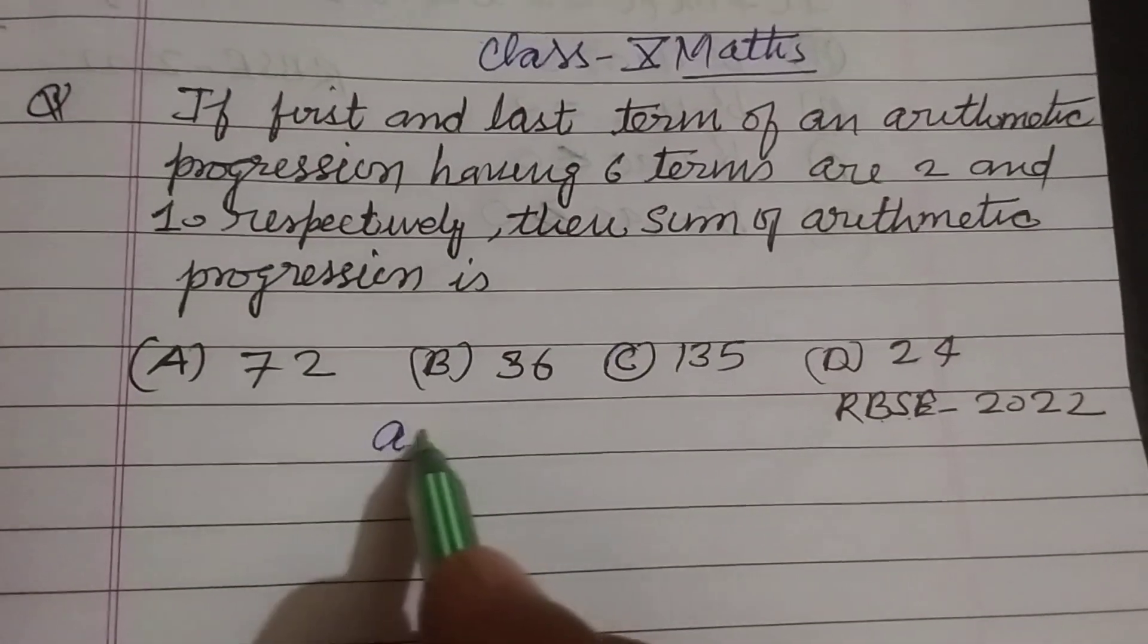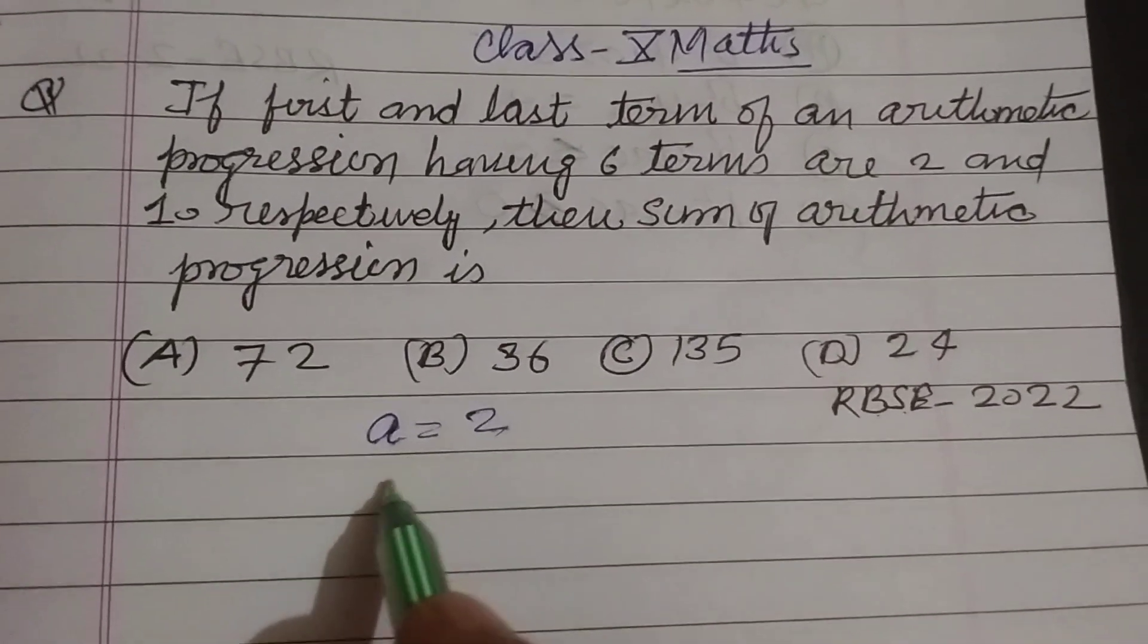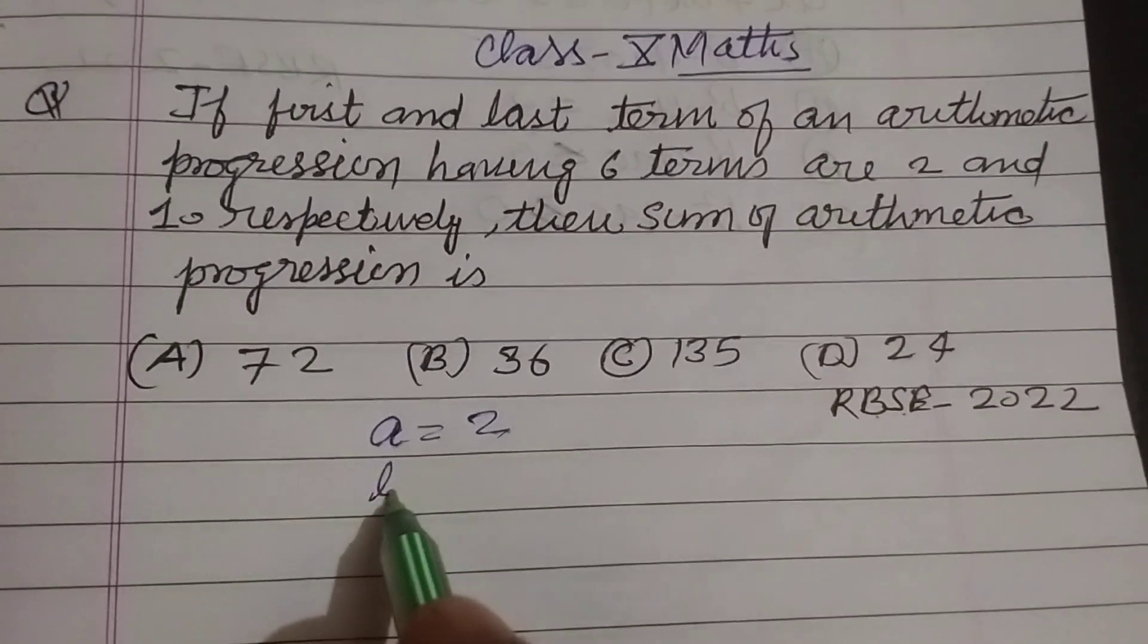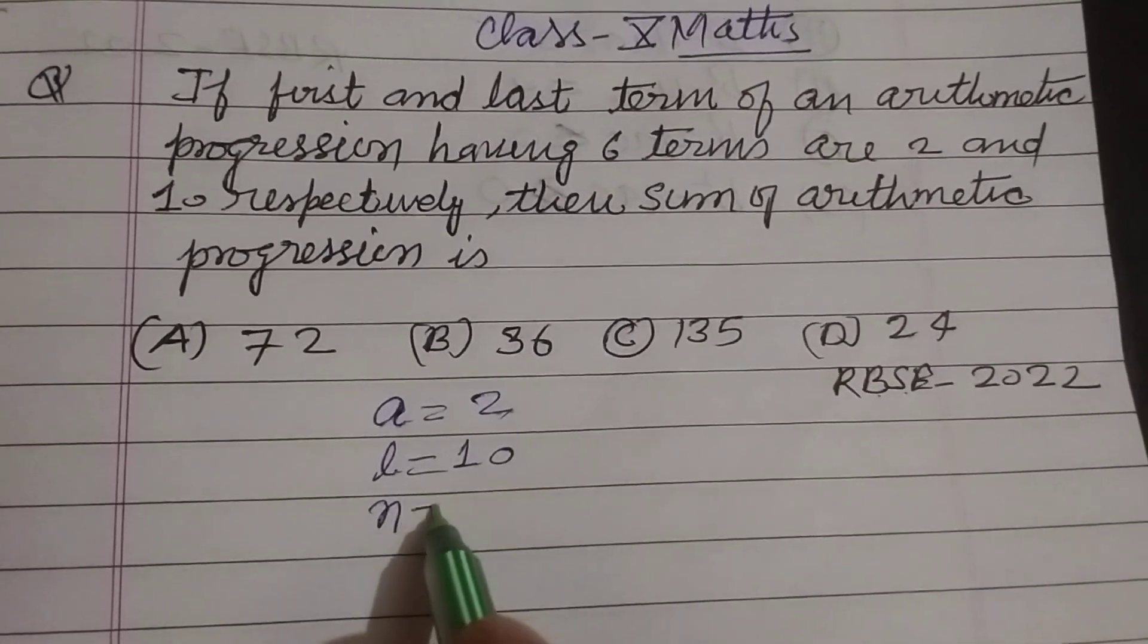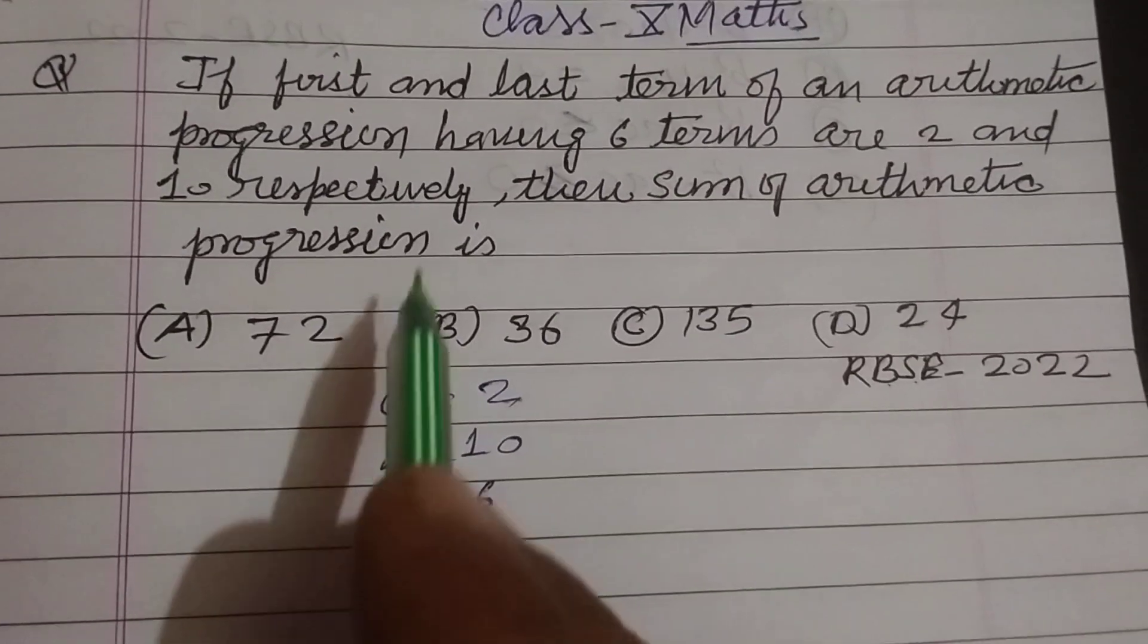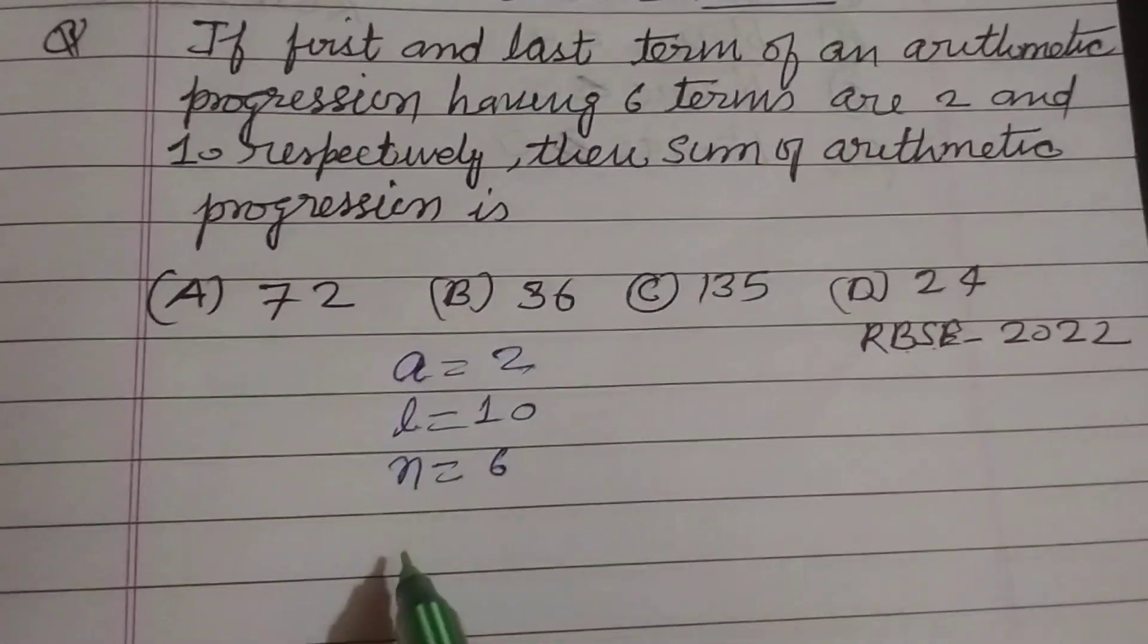So students here, first term is given to us 2 and last term l is given to us 10 and total number of terms n is 6. And we want to find out the sum of the arithmetic progression.